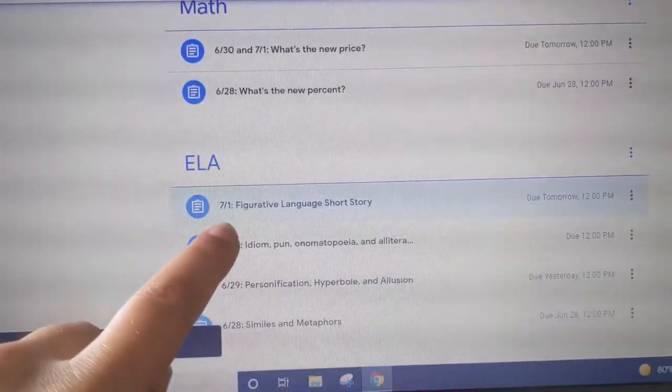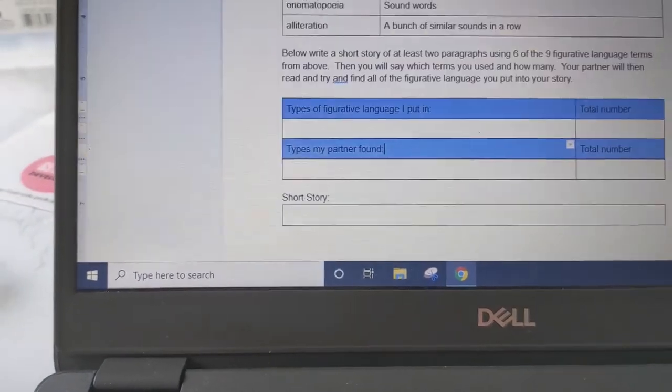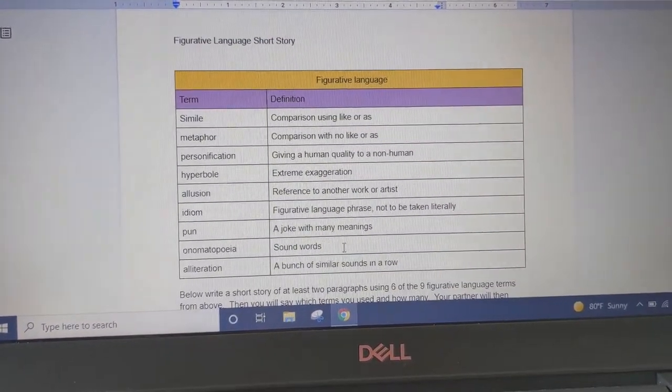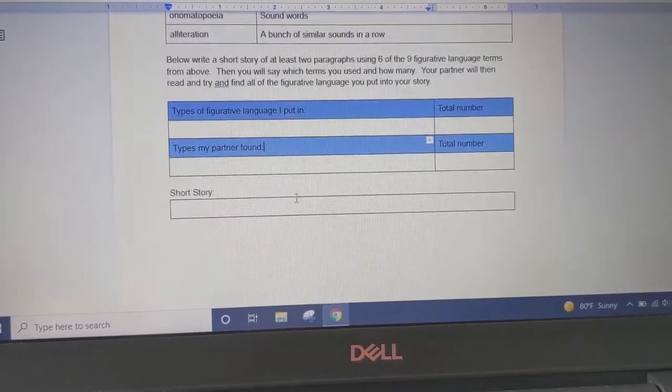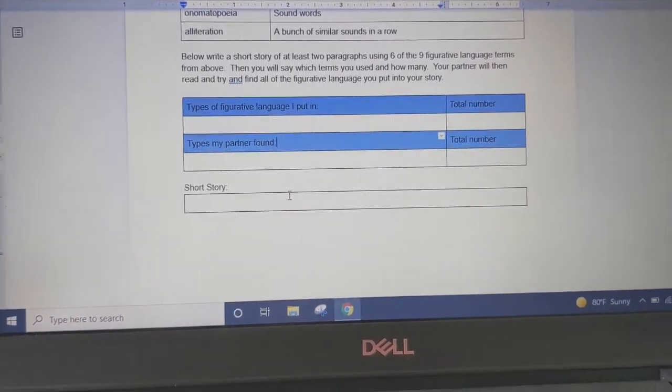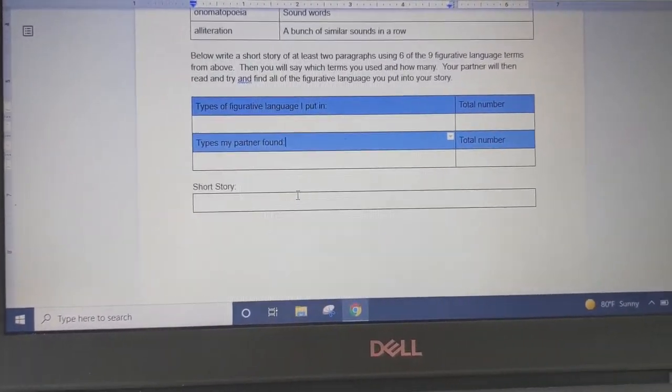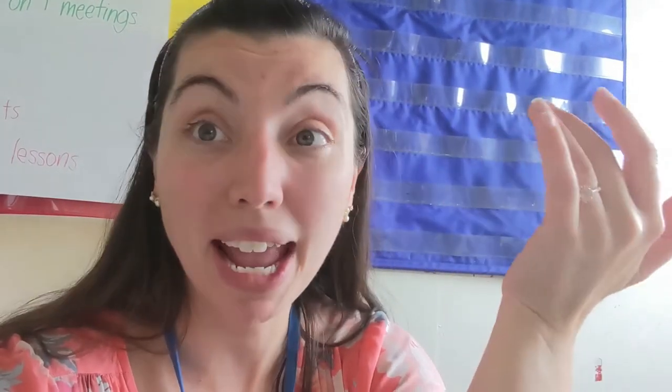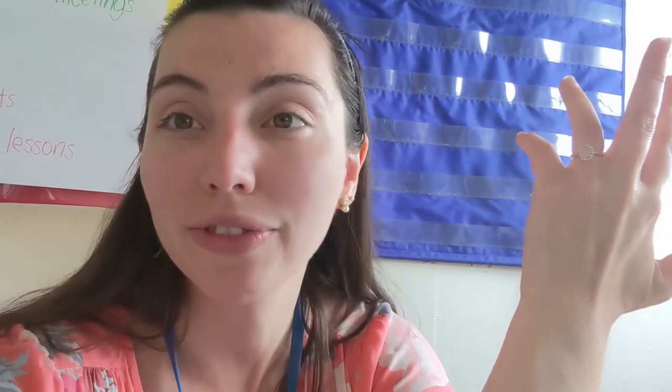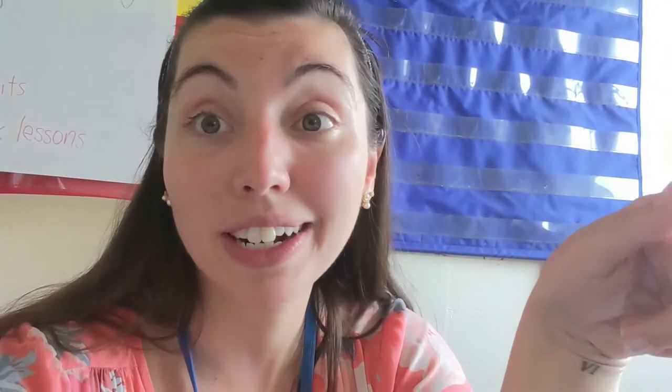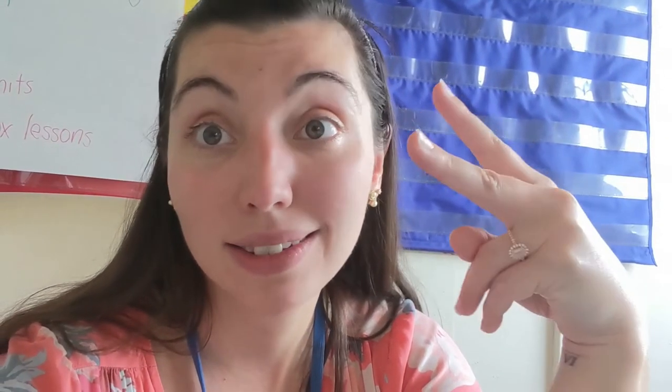Okay, so tomorrow they're going to do a figurative language short story. These are the nine figurative language terms we've been talking about. They're going to write a short story down here using six of the nine. Their partner's then going to scan and see if they can find all of the things they put in there. Nothing super complicated, nothing terribly hard for me to make. And I think the kids will have fun with it because they get to do creative writing, which I don't feel like they get to do a lot. So that's everything that's done for tomorrow. It is 12:30, I am done for the day. See y'all tomorrow.